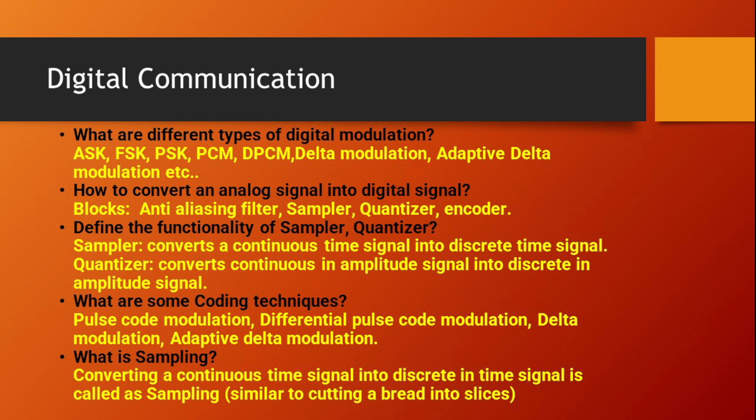To convert an analog signal into a digital signal, the blocks used are the anti-aliasing filter, sampler, quantizer, and encoder. With the help of these blocks we can convert an analog signal into a digital signal. This type of tricky question can be asked in the Viva examinations of your practicals.